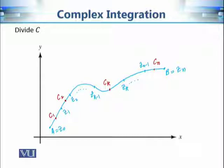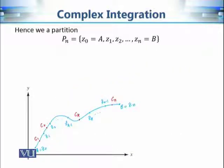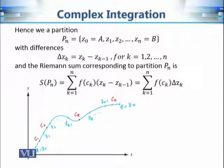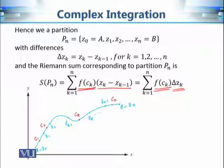To find the height of each rectangle in the real case we chose a midpoint; here we can choose any random point in each sub-interval. So c₁ is a point from z₀ to z₁, c₂ is a point from z₁ to z₂, and so on, with c_k a point from z_{k-1} to z_k. That completes the first stage. Next we define Δz_k = z_k − z_{k-1} for k = 1 to n. We then form the Riemann sum: we take the function value f(c_k) and multiply by Δz_k, summing over k = 1 to n.